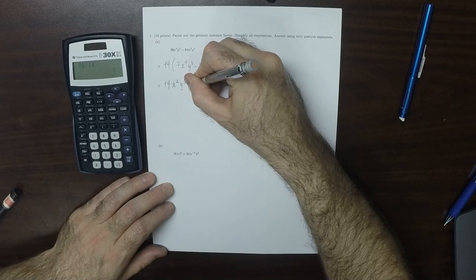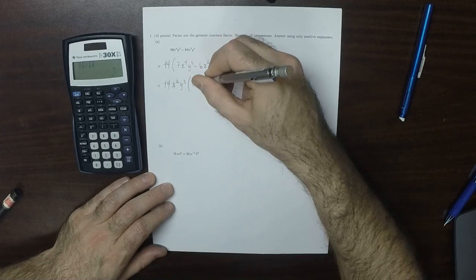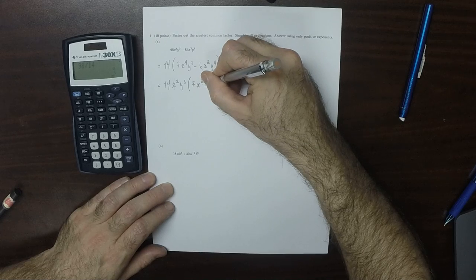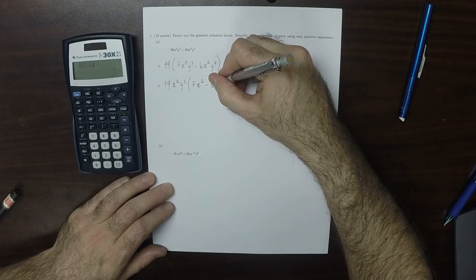Then 7x squared into y's, minus 6, no x's, and 1y.